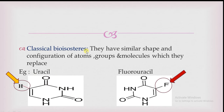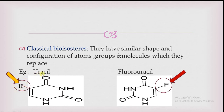Classical bioisosteres have similar shape and configuration of atoms, groups, and molecules which they replace. When replacing with new groups, atoms, or molecules, they contain a similar shape to the previous one. Here is an example: this is the structure of uracil and this is the structure of fluorouracil. Uracil is pyrimidine-2,4-dione. In this uracil, positions are numbered one through five, and at the fifth position there is a hydrogen atom. This uracil is not showing anti-neoplastic activity.